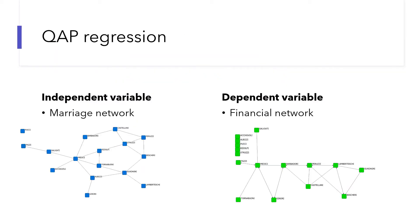Let's look at CREP regression. The difference between CREP correlation and CREP regression is that you need to specify which matrix is your independent variable and which matrix is your dependent variable. A dependent variable is your outcome variable. CREP regression allows us to see which variable is influencing the other. We consider the marriage network as the independent network and the financial network as the outcome variable, that is, the dependent variable, based on the assumption that economic transactions are embedded in social relationships.